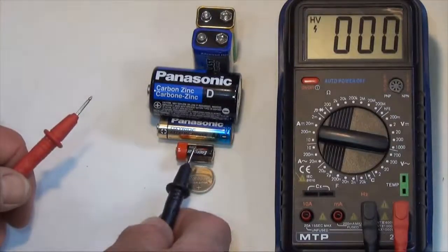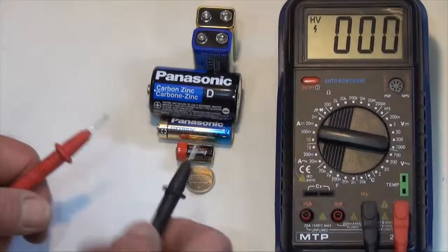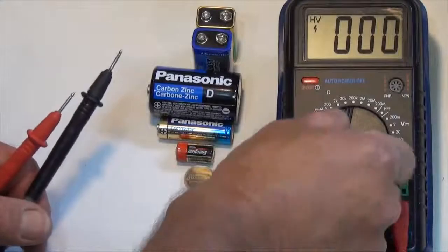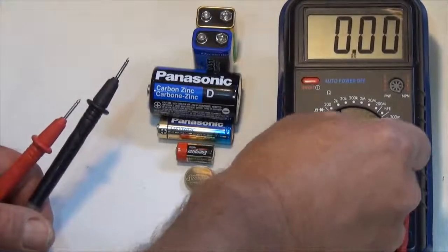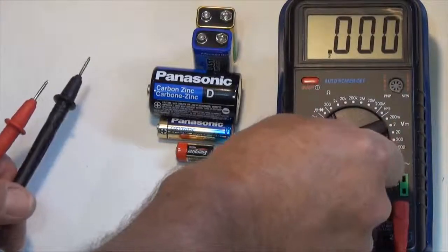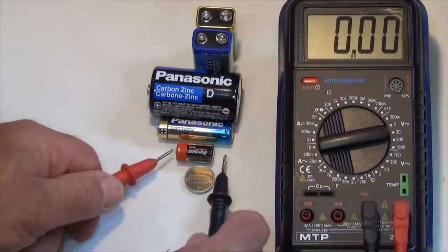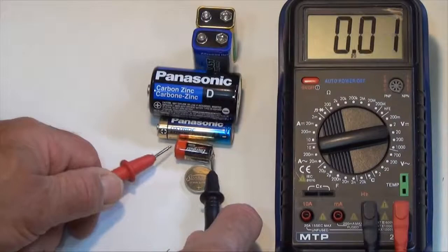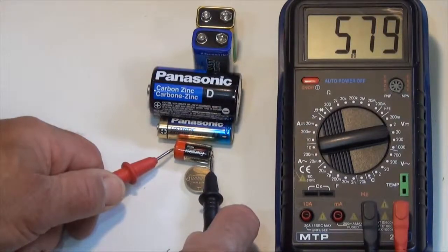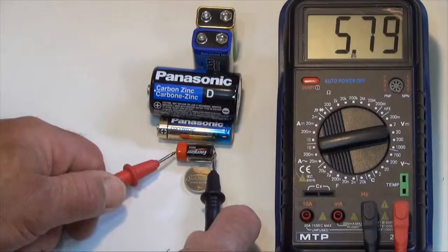So this is the 6 volt photo battery. So I should set my range to the 20 volts. 2 volts would be too low. 20 volts would be perfect. That would be my most accurate reading. So let's measure that. 5.79 volts. So this is slightly depleted.